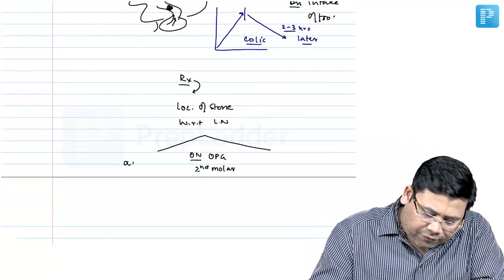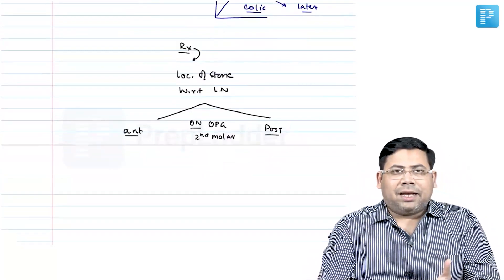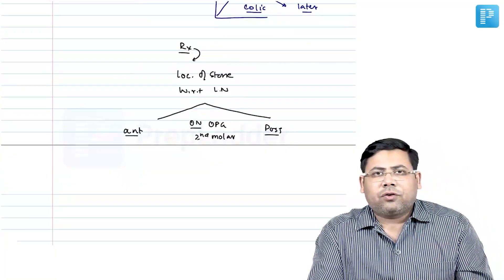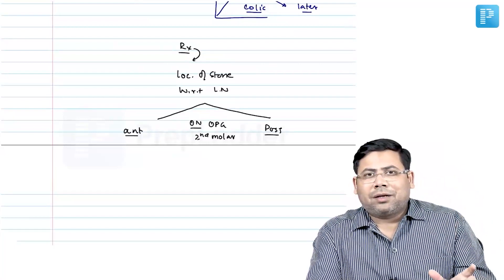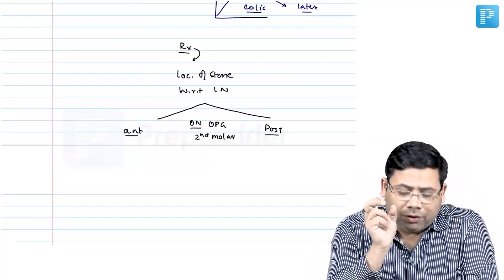If it is anterior to it, if it is posterior to it - on CT scan, you can see the location of stone with respect to the second molar or with respect to the nerve, because second molar is the guide for the lingual nerve.